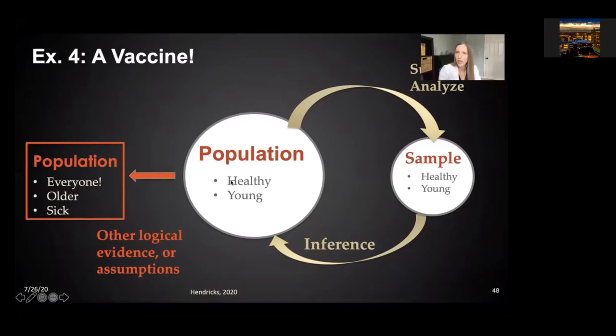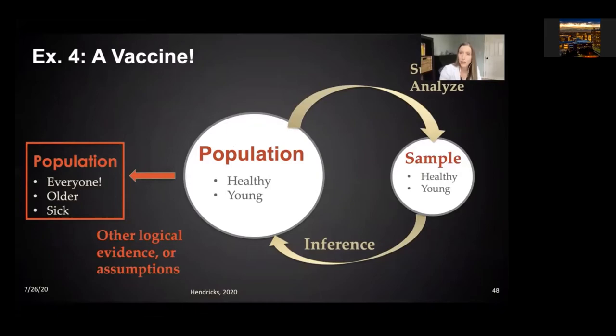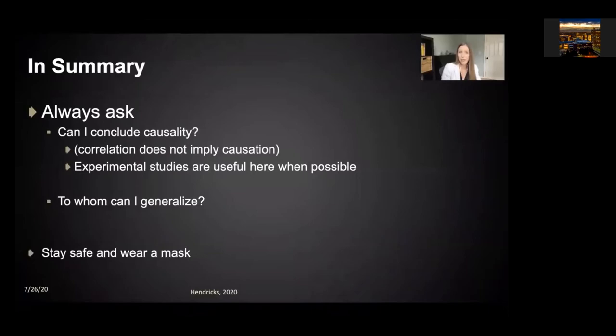I don't know of a phase three human challenge trial yet; there are some phase twos. You may have heard that Moderna is starting a vaccine trial and that UC Health at the University of Colorado Hospital is going to enroll patients — recruiting a thousand patients at University of Colorado Hospital and 30,000 nationwide. This vaccine trial will not be a human challenge. In summary: always ask, can you conclude causality? Experimental studies — remember especially randomized experimental studies — are really useful here. And then ask, to whom can I generalize? Stay safe, wear a mask. Thank you very much.